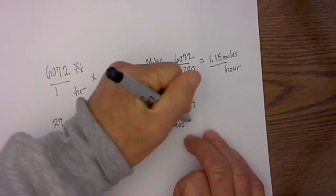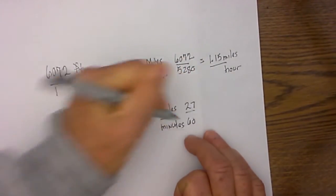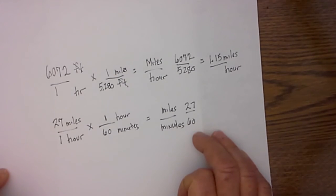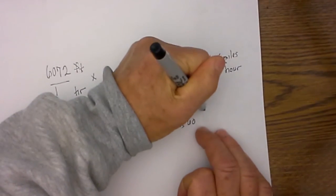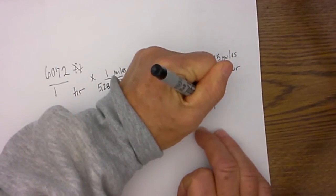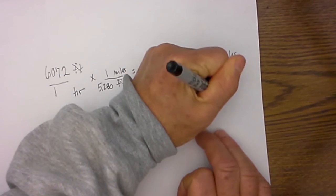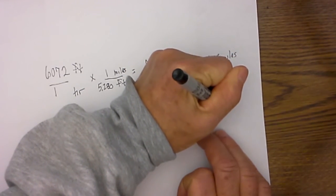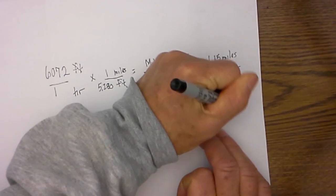One times 60 is 60. I then can convert that into a decimal, and it will be 0.45 miles a minute.